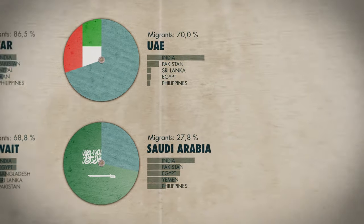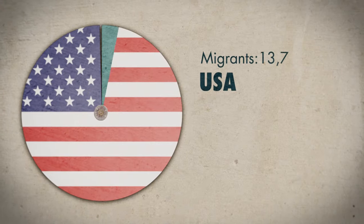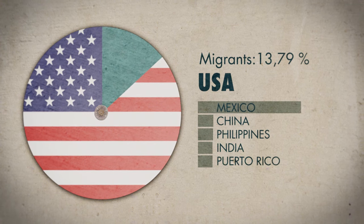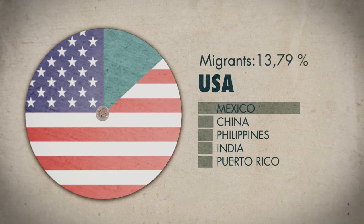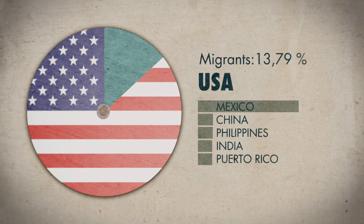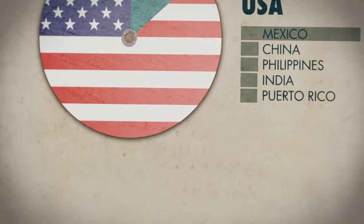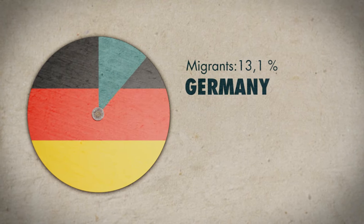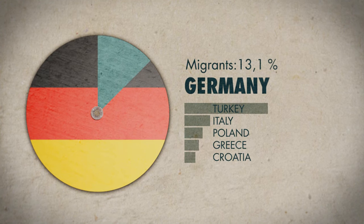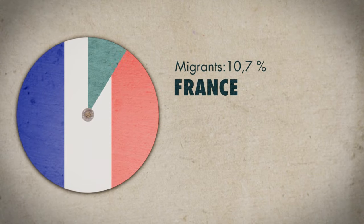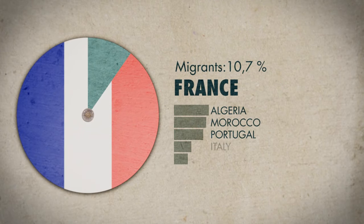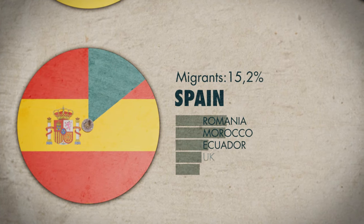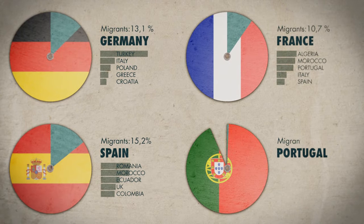Most migrants in the U.S. come from Latin America, particularly from Mexico. In Europe, the origin of immigrants differs considerably between countries and reflects their historical development. In Germany and Denmark, a large share of migrants are of Turkish origin. Most immigrants in France, Portugal, and Spain come from their former colonies.